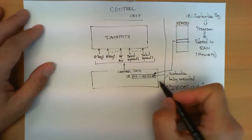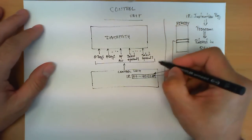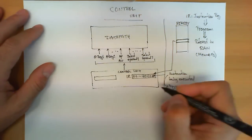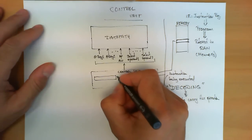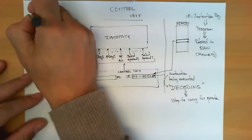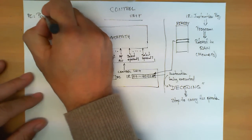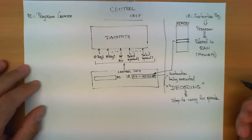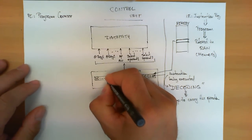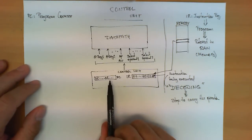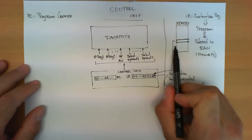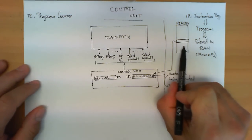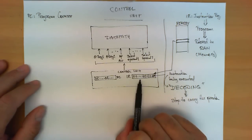The next question is how does the control unit know what location needs to be loaded with the following instruction? This brings us to another very important register within the control unit, typically called the PC, which stands for program counter. The value of this register is precisely the memory location from which the control unit needs to perform a read operation so that the next instruction to be executed gets loaded into the instruction register.